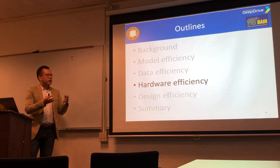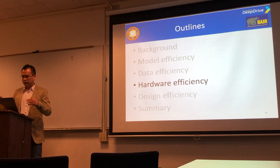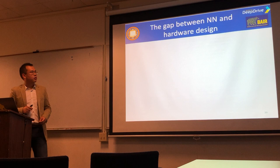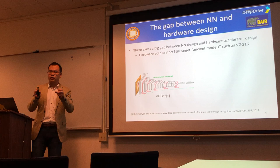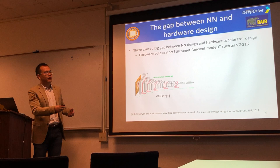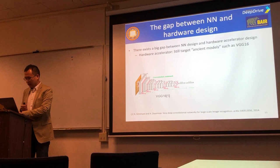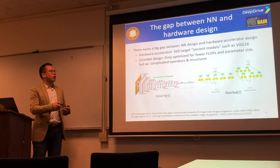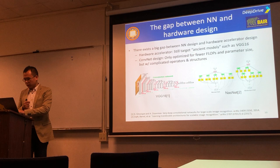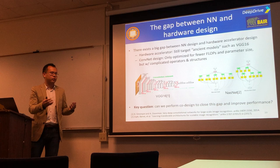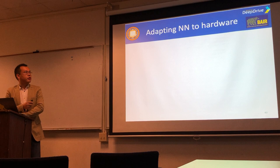Next is hardware efficiency. We need to co-design software and hardware to achieve better efficiency improvements. However, there's a big gap between neural network design and hardware design. Hardware communities innovate on making hardware faster but benchmark on ancient models like VGG16 with large complexity. Neural network researchers optimize for fewer FLOPs or fewer parameters but sometimes create complicated structures that are hard to map to hardware. The key question is: how do we perform co-design to close this gap? Our strategy is to adapt neural networks to hardware, targeting the ZC706 board from Xilinx, a typical embedded applications board.